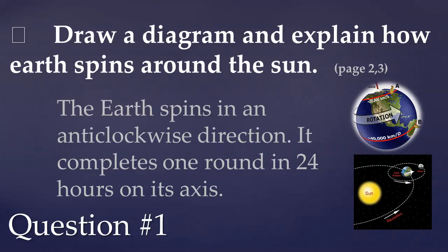But the Earth has another movement — we call it revolution. It is a whole orbit in which our Earth moves around the Sun. The complete orbit takes 365 days. We call it revolution. One year is completed in 365 days. So Earth's two movements determine our day and our year.